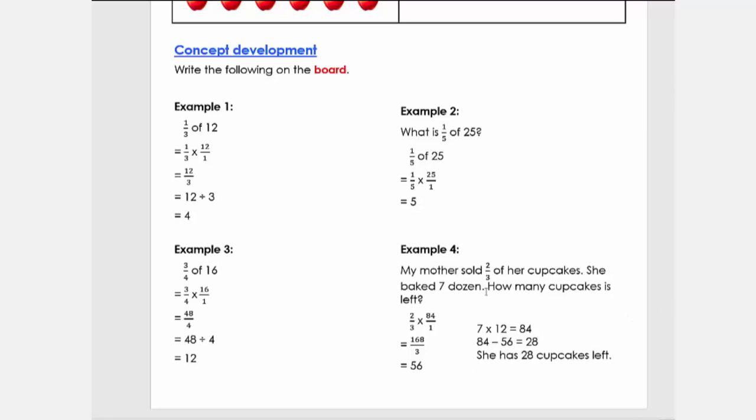Now the number sentence must be: my mother sold two-thirds of 84. We're going to write it as two-thirds times 84 over 1, because 84 divided by 1 is 84. Listen carefully again. I said my mom sold two-thirds of 84. So then we get this step. What we can do is multiply the top numbers and the bottom numbers and divide it.